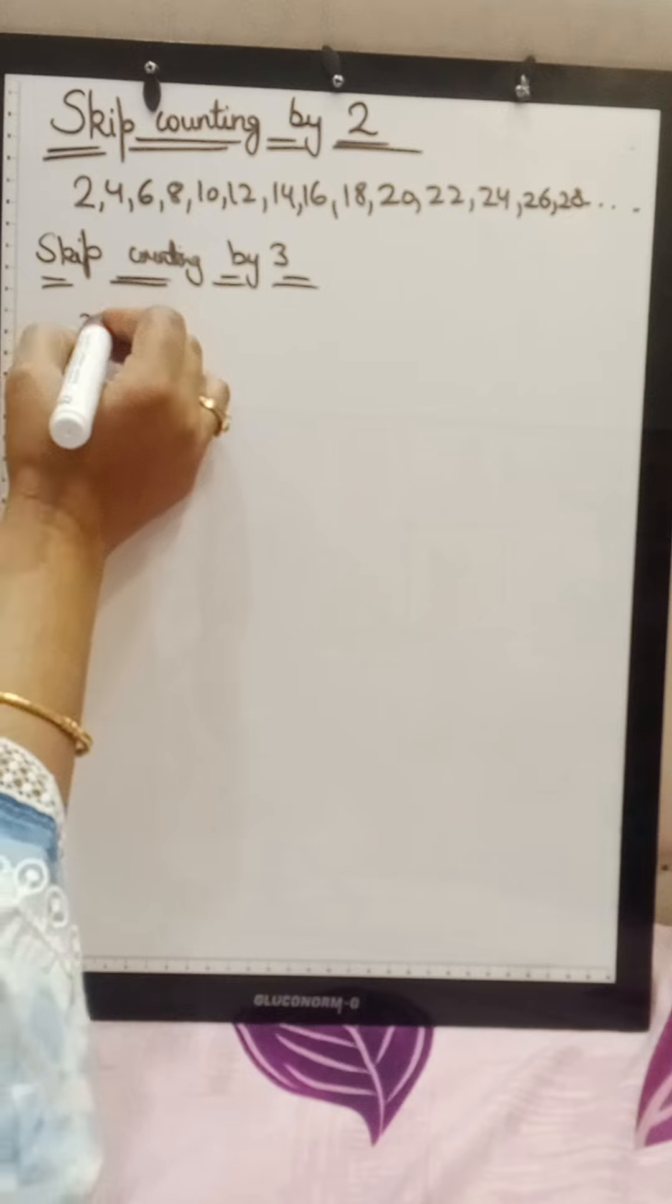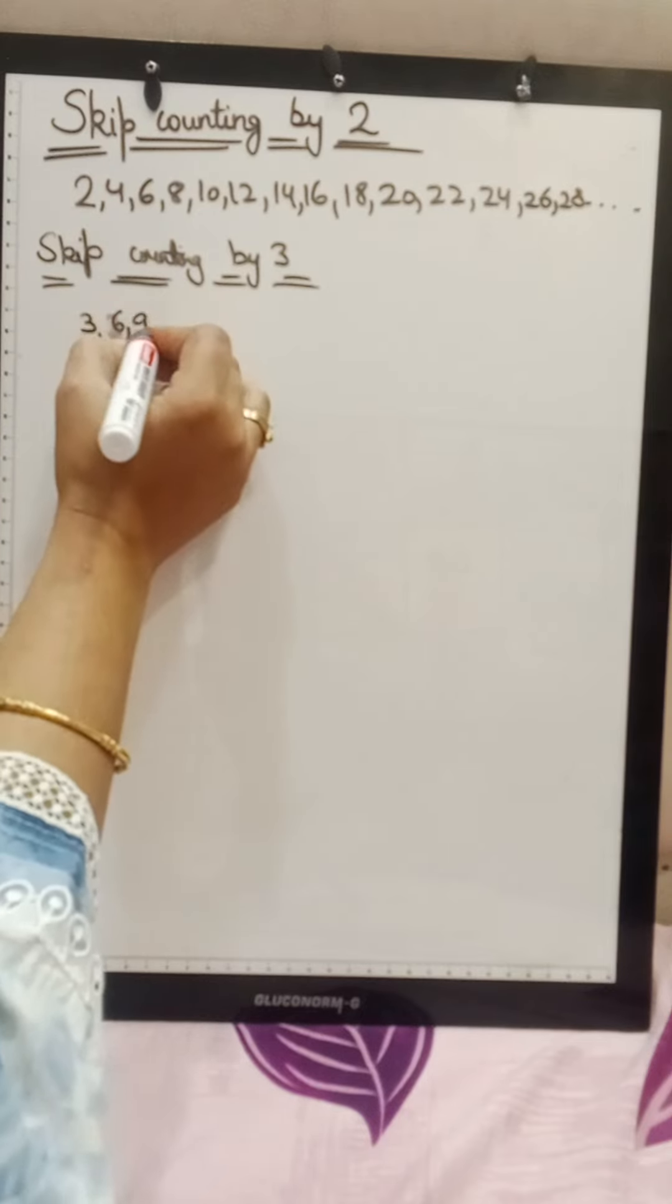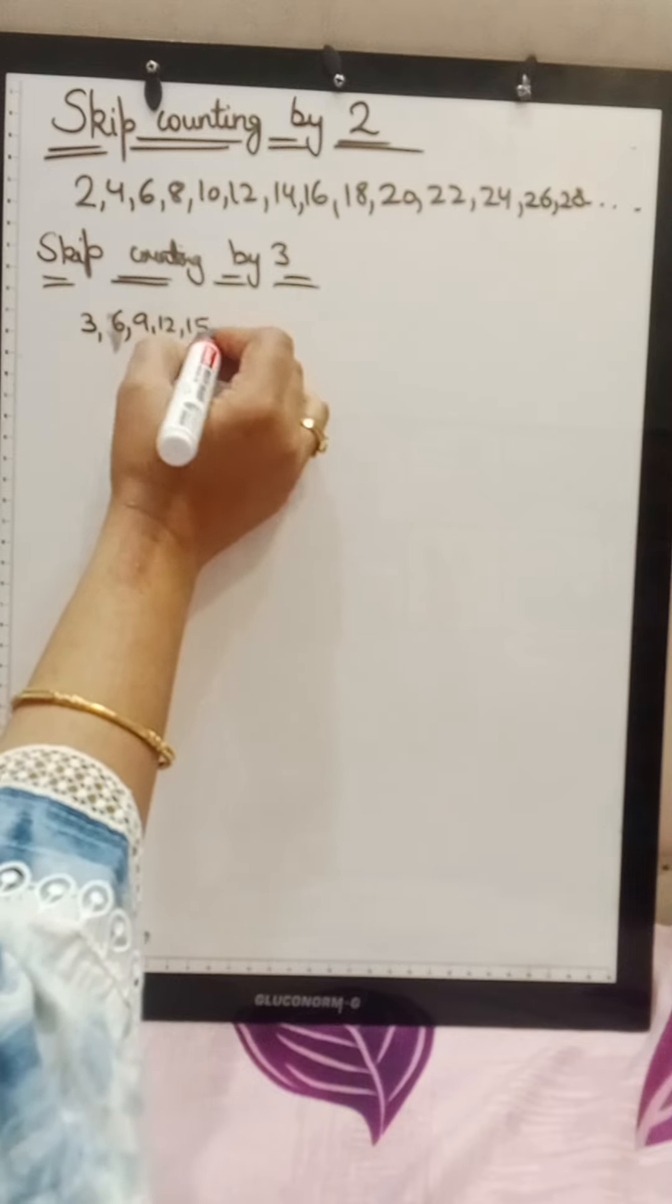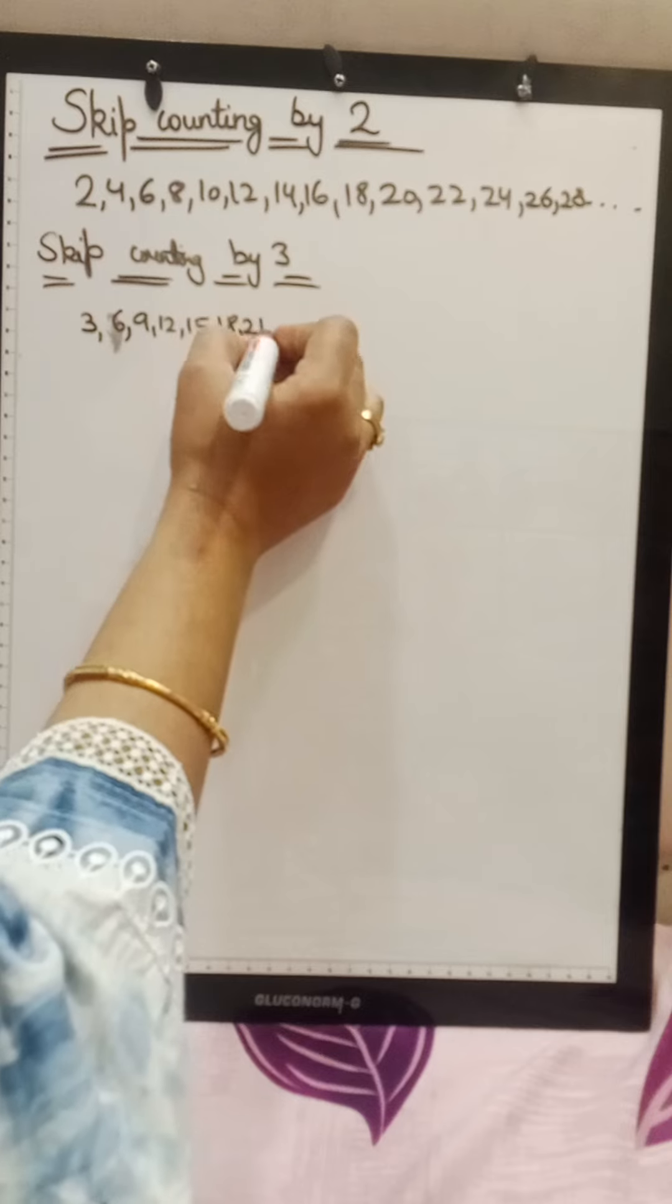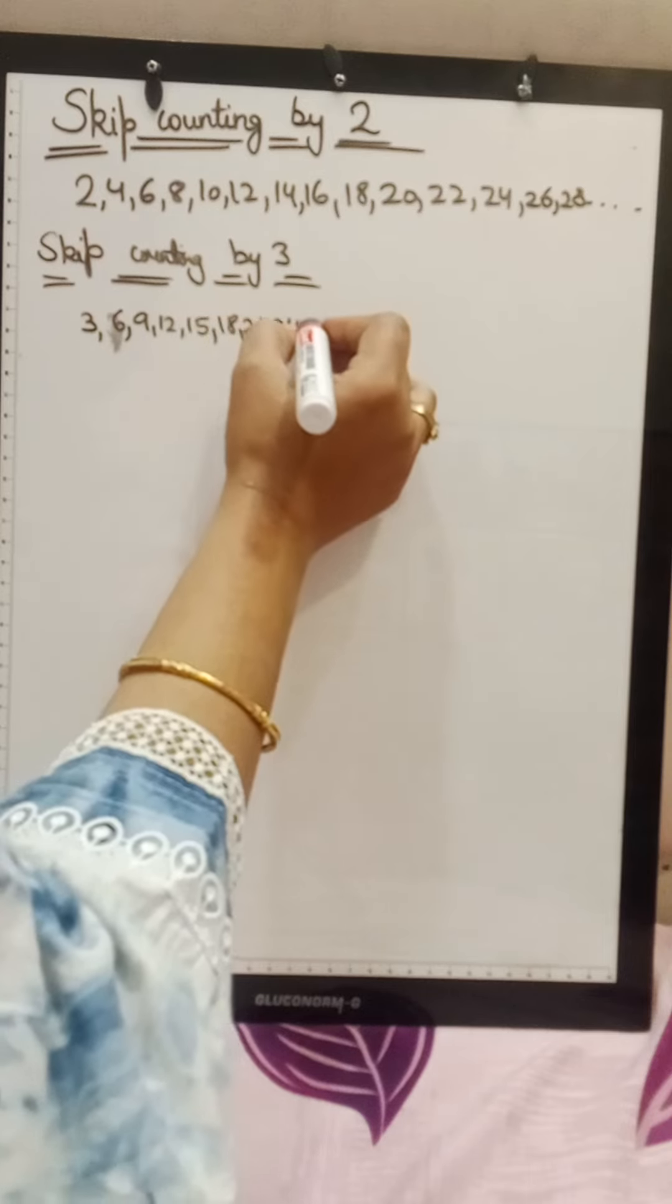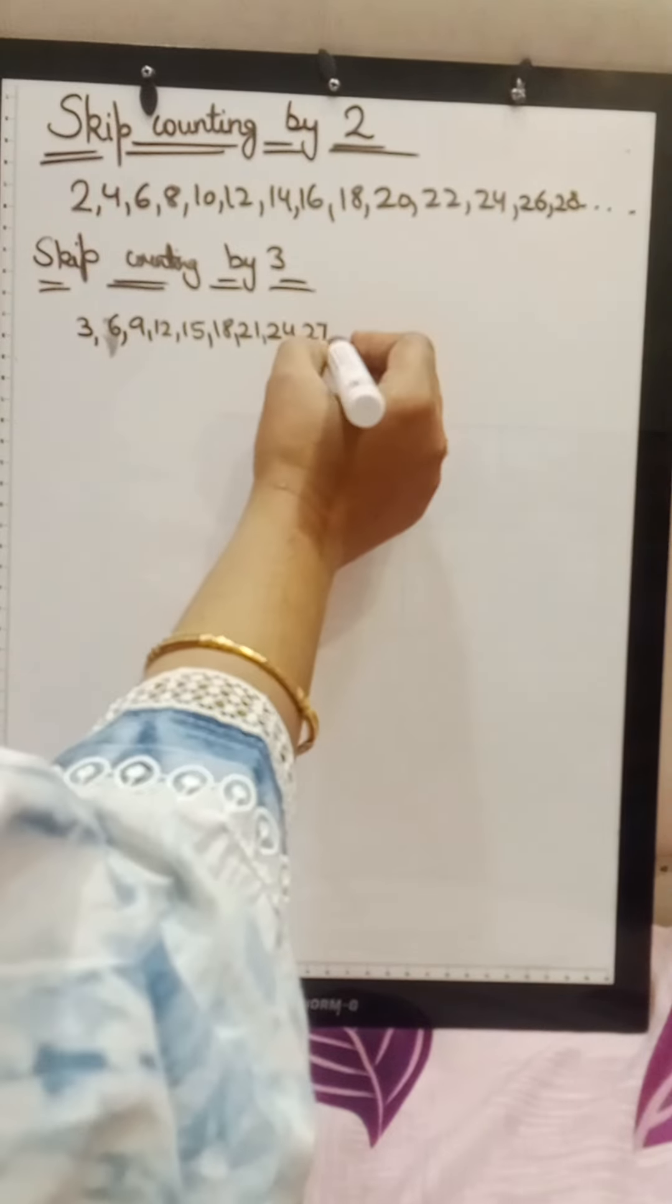3 plus 3 is 6. 6 plus 3 is 9, 9 plus 3 is 12, 12 plus 3 is 15, 15 plus 3 is 18, 18 plus 3 is 21, 21 plus 3 is 24, 24 plus 3 is 27, 27 plus 3 is 30.